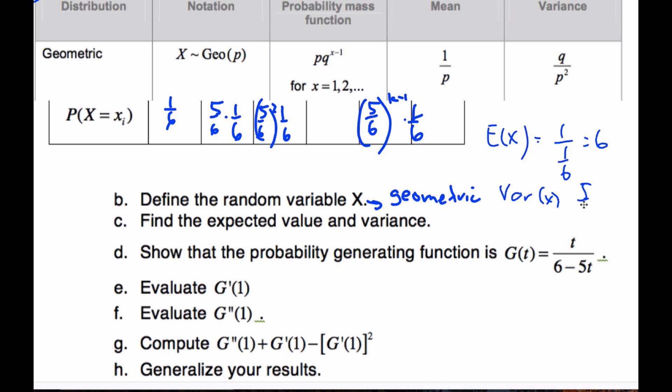And the variance of X will be five-sixths divided by one-sixth squared, which if you work on that, I've done that in the past and it is going to give you 30. So there's our first bit, and this is review from before.